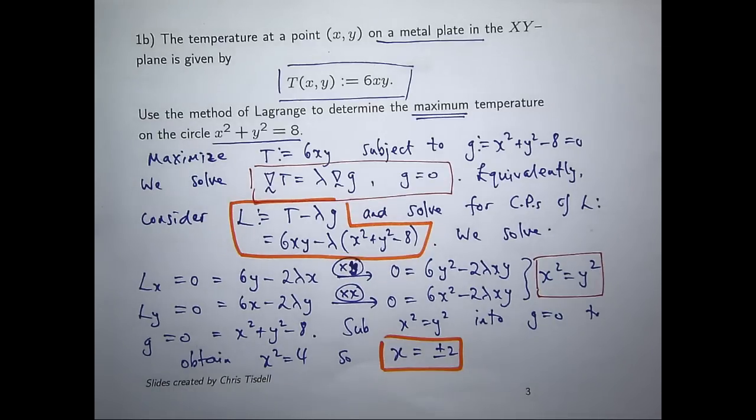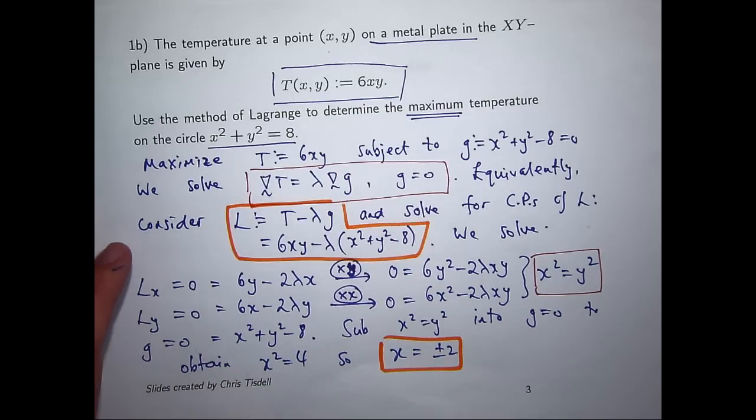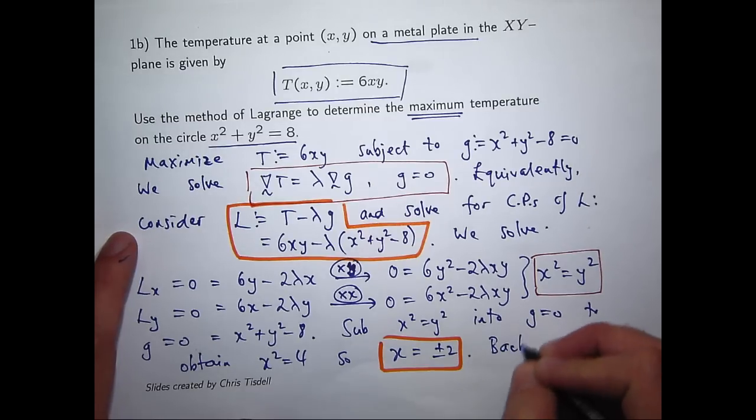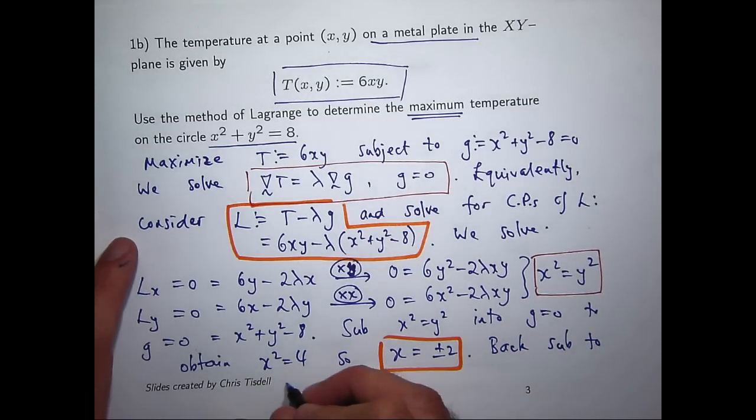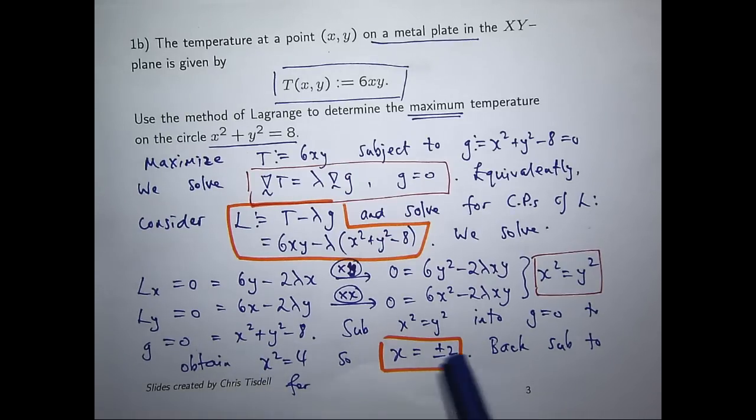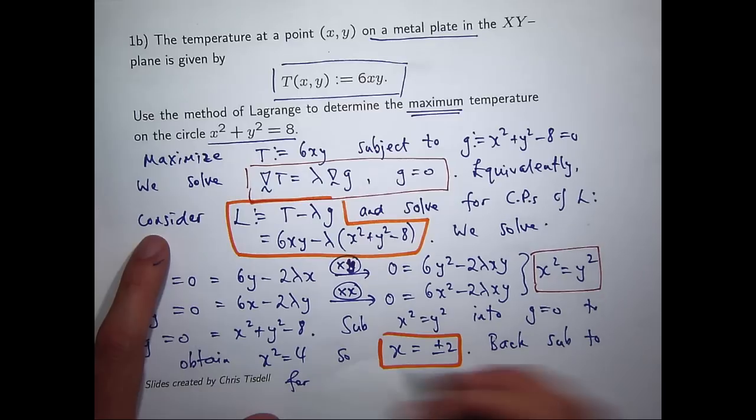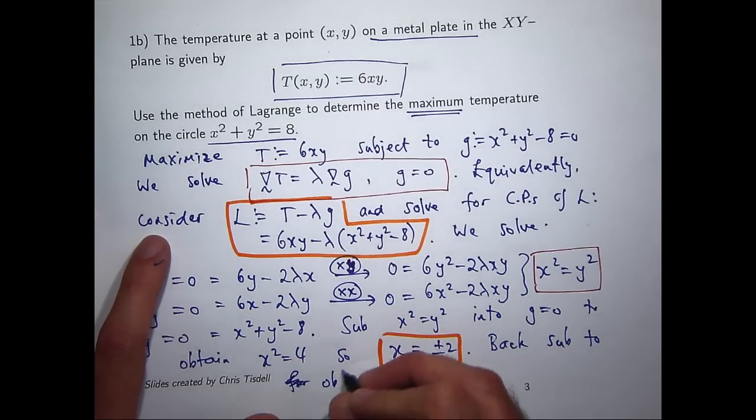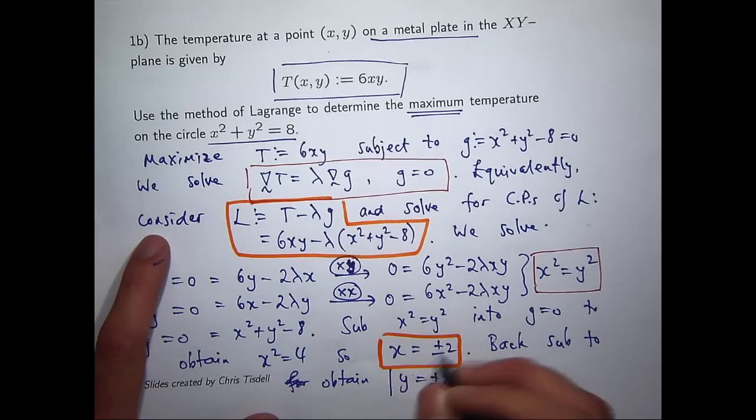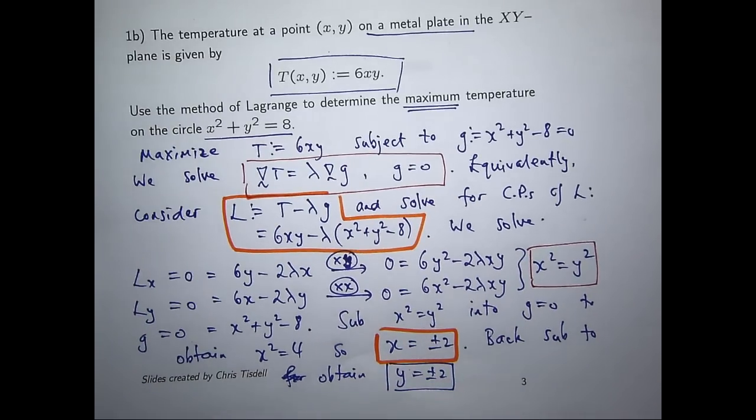All right, so let's go back and find the corresponding y components for each of those x values. Well, again using the constraint equation, what am I going to get? If x equals plus or minus 2, x squared is going to be 4, so I can rearrange this and get y squared equals 4, so y is going to be plus or minus 2. We just need to alternate the signs on those points.